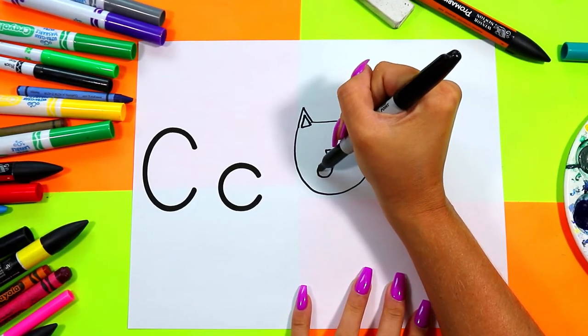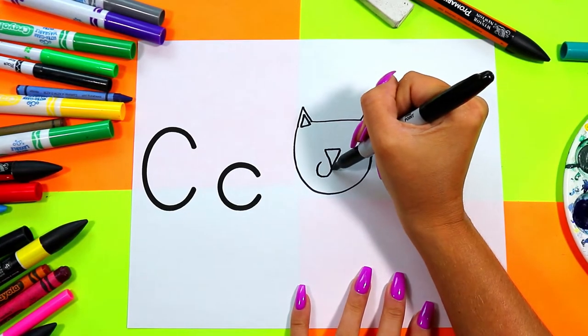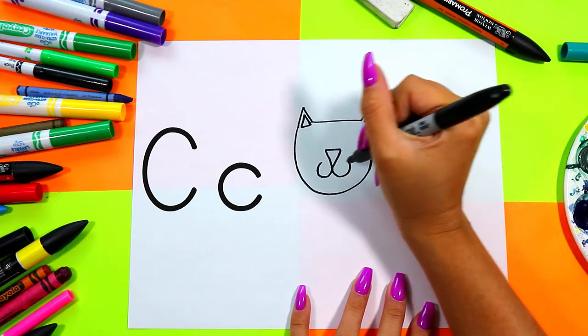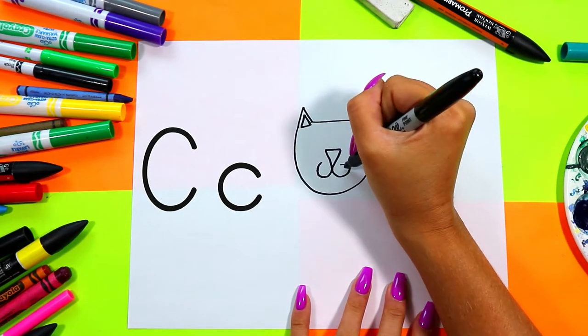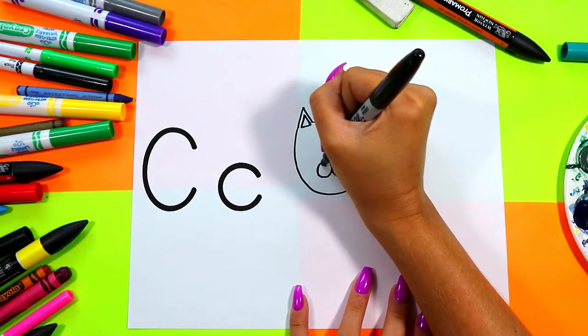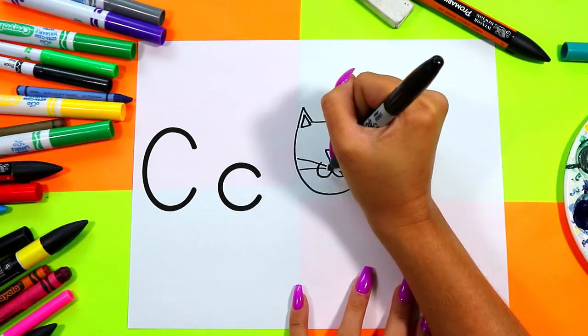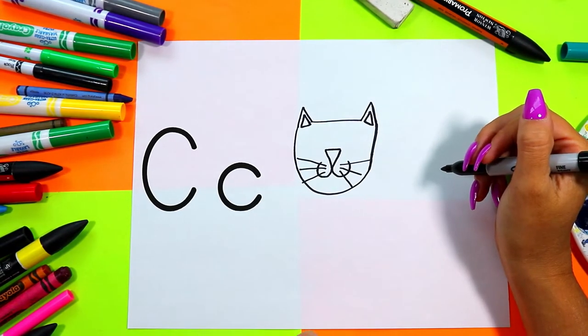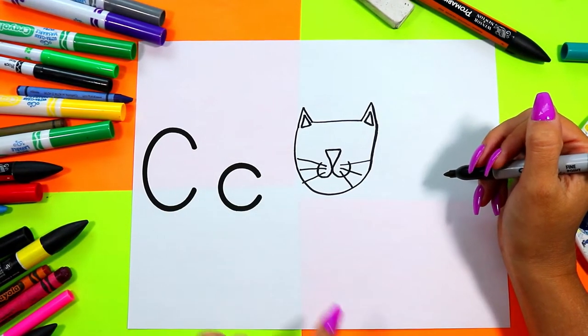Draw one curving line on one side and one curving line on the other to make cat's mouth. We can add one, two, three straight lines on each cheek to make one, two, three whiskers.